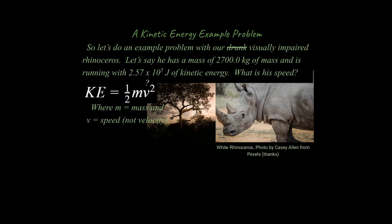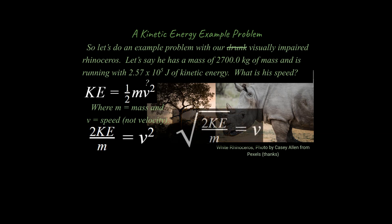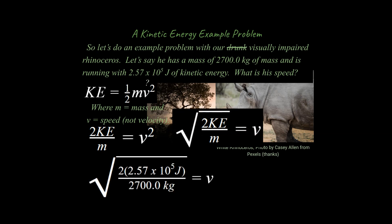We're going to solve for his speed rather than just plugging numbers in — we'll do a little algebra here. If we're asked for speed, we're looking for the V value and we want to isolate it. Take a moment and think about how you would isolate this equation. Hopefully you're able to come up with this — it's actually really easy. You take the square root of 2KE over m, plug in your numbers, and get your answer. That's how you do a basic calculation using kinetic energy.